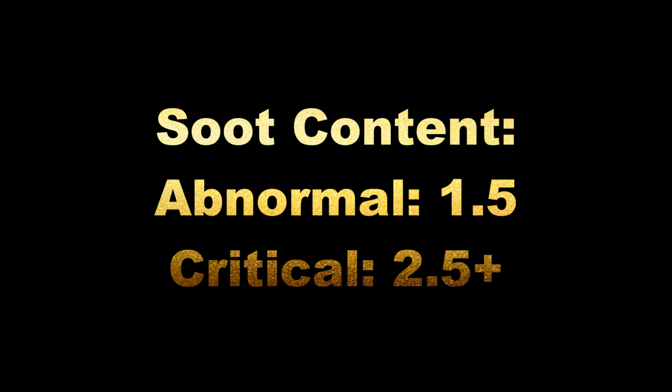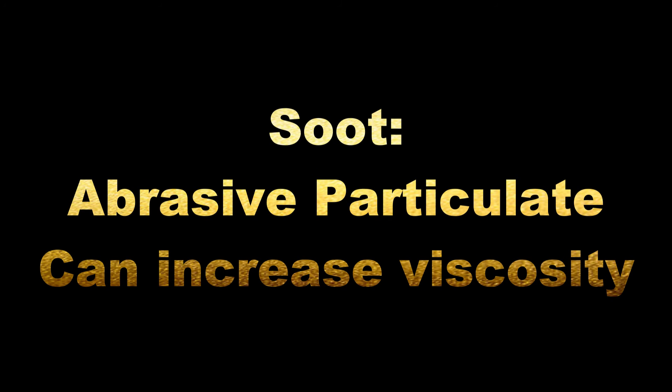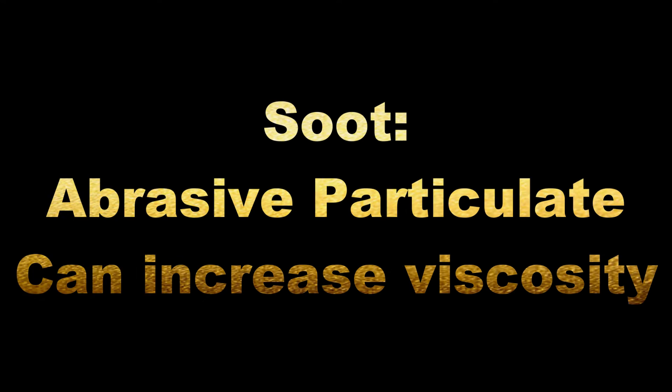The amount of soot present in the oil will also be reported. The results are measured in light absorption units, and is typically considered abnormal at a value of 1.5, and critical at 2.5 or greater. The threshold of detection from any soot meters is 2.5, and any value exceeding this threshold is an indicator of an excessive soot issue. Soot is comprised of abrasive particles and will also contribute to higher viscosities once the oil can no longer effectively disperse the soot particles.